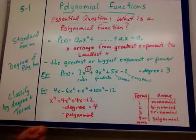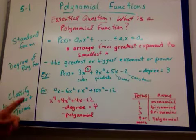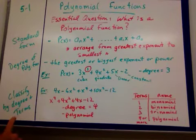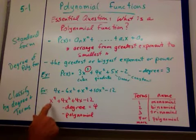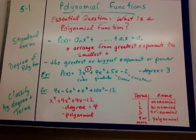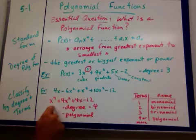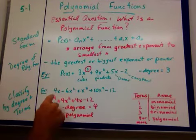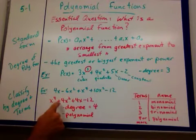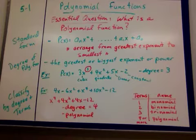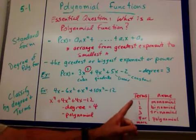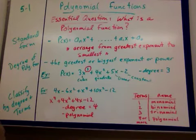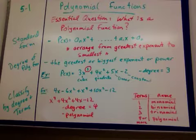So a typical example that you'll start with in the homework here is classify by degree and terms. So they give you a polynomial function, and you've got to classify it by its degree and terms. So the first thing we want to do is write it in standard form. Combine any like terms. I've got an x to the fourth, I've got minus 6 and plus 10x squared, so that's plus 4x squared, plus 4x minus 12. Biggest exponent is a 4, and since it's more than three terms, we just call it a polynomial.